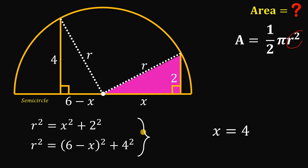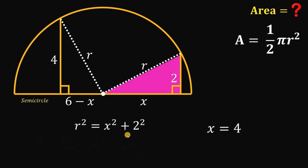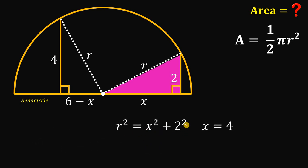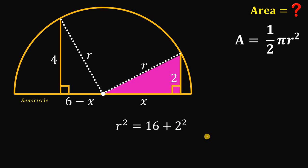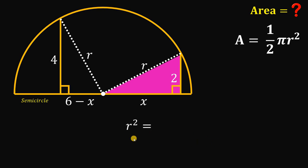Our goal here is to solve for the value of r squared. R squared is simply equal to x squared plus 2 squared — we'll use the first equation. We know the value of x is 4, so we can replace x with 4. Simplifying: 4 squared equals 16, and 2 squared equals 4. So 16 plus 4 gives us 20. That is the value of r squared.